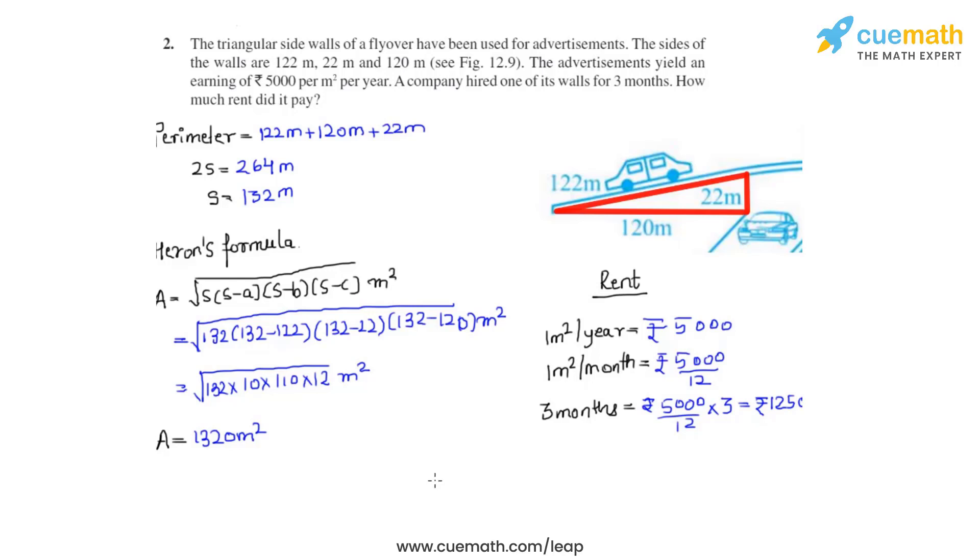Now the rent which the company had to pay for 1320 meter square can be calculated by multiplying the area with 1250. We get the total cost to be equal to rupees 16 lakhs 50000.